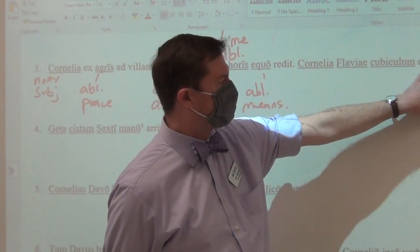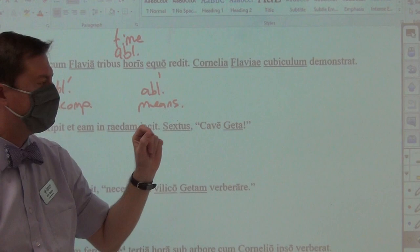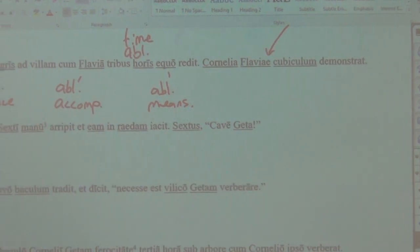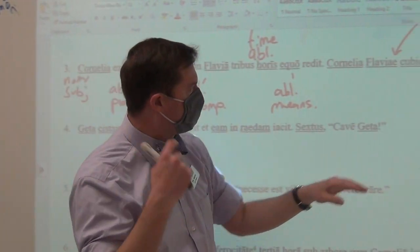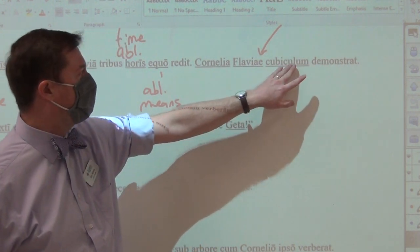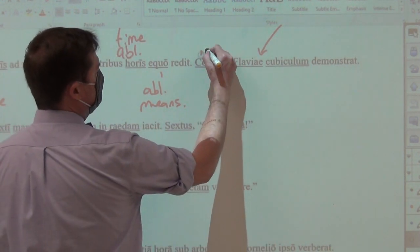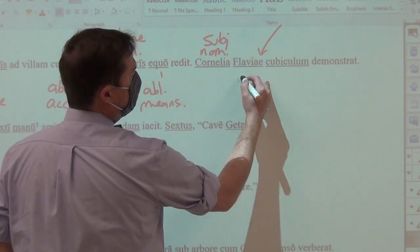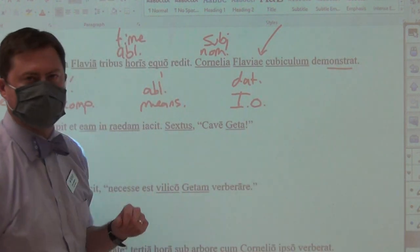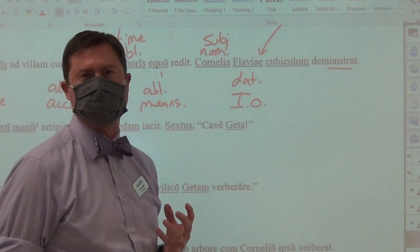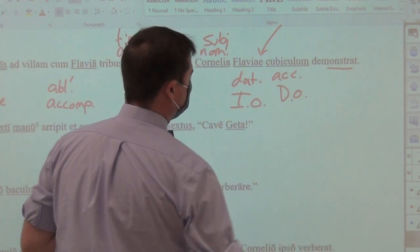Then Flavia demonstrates — shows — the bedroom, her bedroom, to Flavia. So Cornelia shows the bedroom to Flavia. Now I see that A-E ending. Remember, A-E could be genitive, dative, or nominative. How do I know it's dative? Because I have a verb here that is a ditransitive verb: give, show, speak, or tell. Show the accusative direct object to the dative indirect object — that is the receiver of that direct object. So Cornelia is obviously my nominative subject. Flavia is my dative indirect object — she is receiving that bedroom. That's my ditransitive verb: give, show, speak, or tell. Gotta ring the dative bell. The bedroom is my accusative direct object.